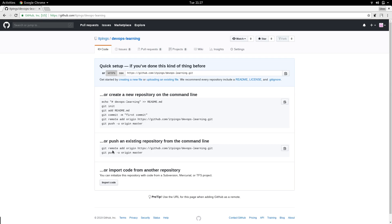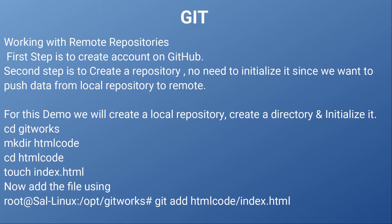It's now telling you how you can push data from your existing repository from the command line, and how you can send data from your local to remote repository. We are not going to close this page. I'm going to go back to the slide and continue with the third step, which is: for this demo we will create a local repository, create a directory in it, and initialize it.